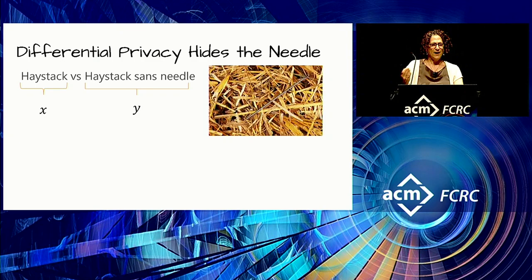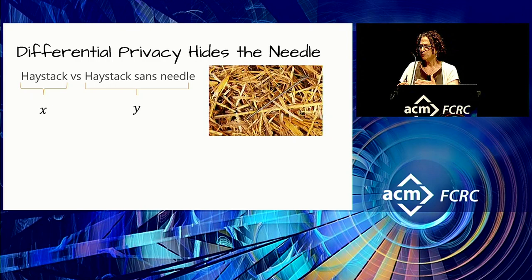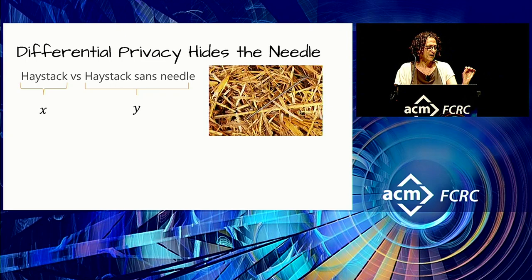I said earlier that if you're looking for a needle in the haystack, differential privacy is the wrong tool. Indeed, it was designed to protect outliers. In some sense, outliers need privacy protection much more than people who fit in with the mainstream. If X is the haystack and Y is the haystack without the needle, then we get essentially the same behavior either way.